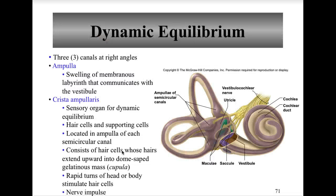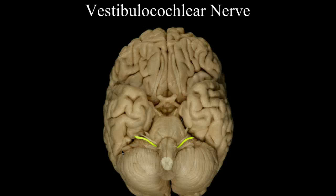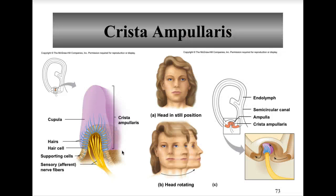That nerve impulse — when the head is moved, the gelatin stays put due to inertia, causing the hairs to bend. That triggers a sensory impulse that travels on the vestibular branch of the vestibulocochlear nerve to the pons of the brain, which then directs the impulse to the cerebellum for interpretation. Here you can see the vestibulocochlear nerve as it extends out from the brain. The crista ampullaris structure includes the hair cells, supporting cells, and the sensory or afferent nerve.